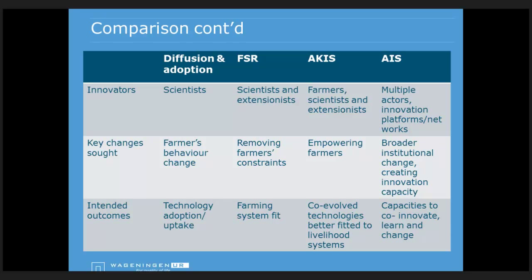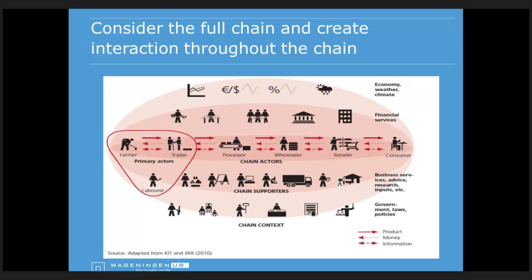Innovation increasingly takes place in networks of actors. It's not a pipeline approach anymore - it's co-innovation, simultaneous work by different categories of people. It's about creating broader institutional change and innovation capacity, not just changing farmers' behaviors. The full chain needs to be considered, with interaction created throughout all stages of the innovation process - really moving from a pipeline to a network approach.